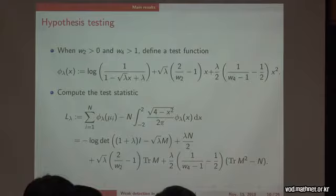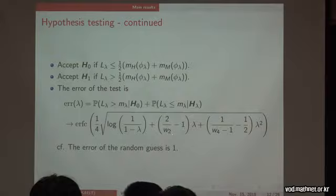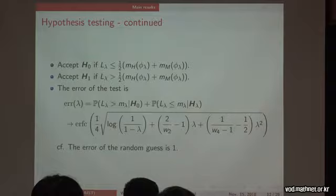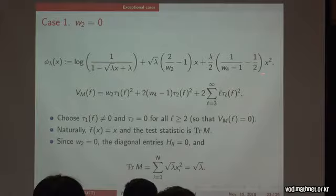For the adaptive test when lambda is unknown: we suspect a signal may be present but don't know its strength. We can pick a trial value t and construct the test statistic using phi_t instead of phi_lambda. If lambda is uniformly distributed on (0,1), the best choice of t (found numerically via Mathematica) is approximately 0.688, giving an average error of approximately 0.769 — better than random guess. For different prior distributions on lambda, the same approach yields different optimal t values.